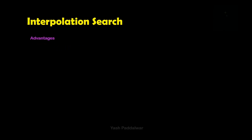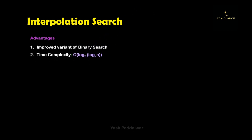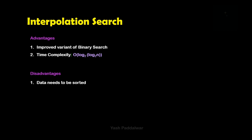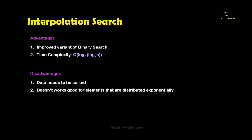Let's look at the advantages of interpolation search. First, it is an improved variant of binary search because it can find the element in a single iteration if the data is uniformly distributed. Its time complexity is O(log log n). For the disadvantages: the data needs to be sorted, and it is not recommended to use interpolation search when the data is exponentially distributed.